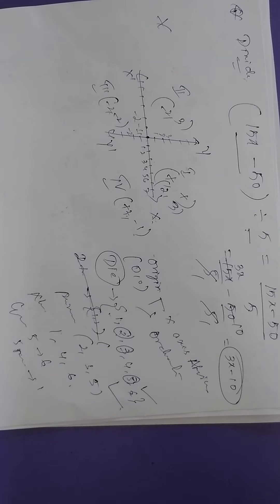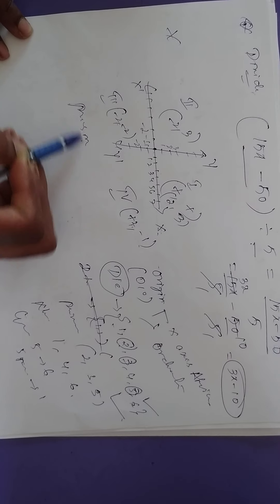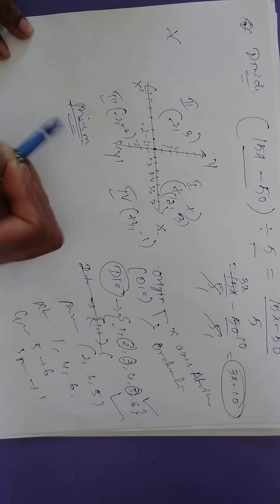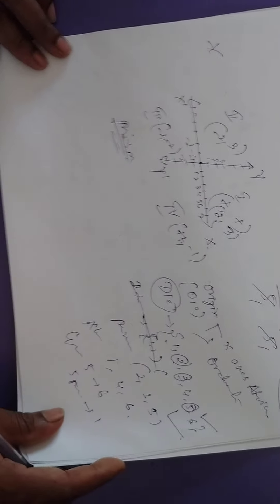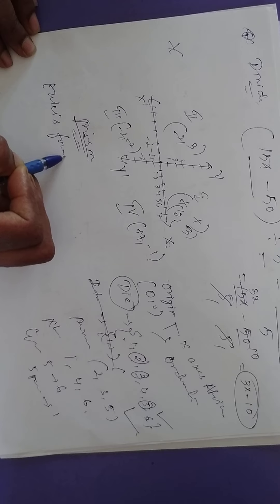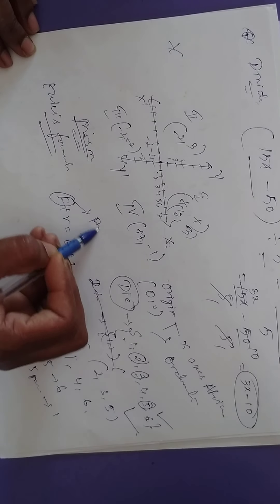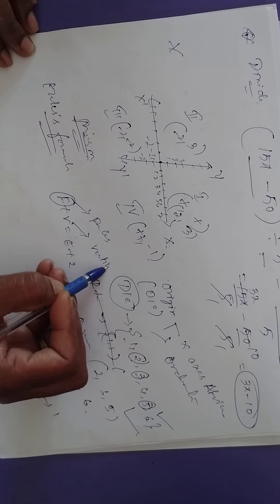This is all about probability. Next, identifying prisms among the given figures — which are prisms and which are not. And here, Euler's formula: you have to calculate using it. Euler's formula is F plus V equals E plus 2. F is the number of faces, V is the number of vertices, and E is the number of edges.